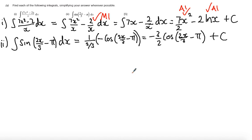In part B, there is a method mark for correctly integrating and getting the cos 2x over 3 minus pi. And finally, there is an answer mark if you correctly got that the coefficient of this is minus 3 over 2.